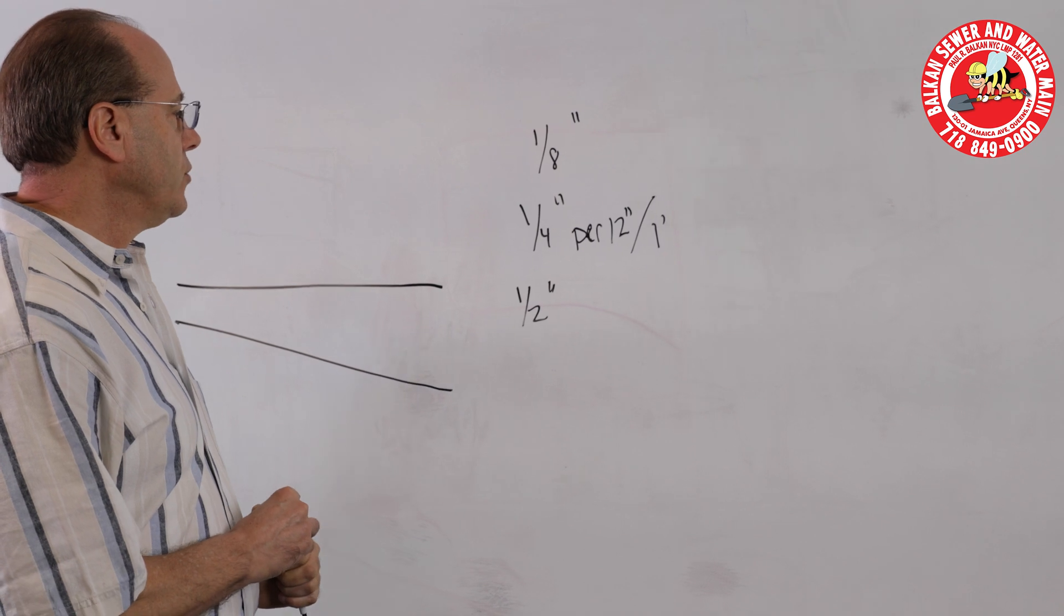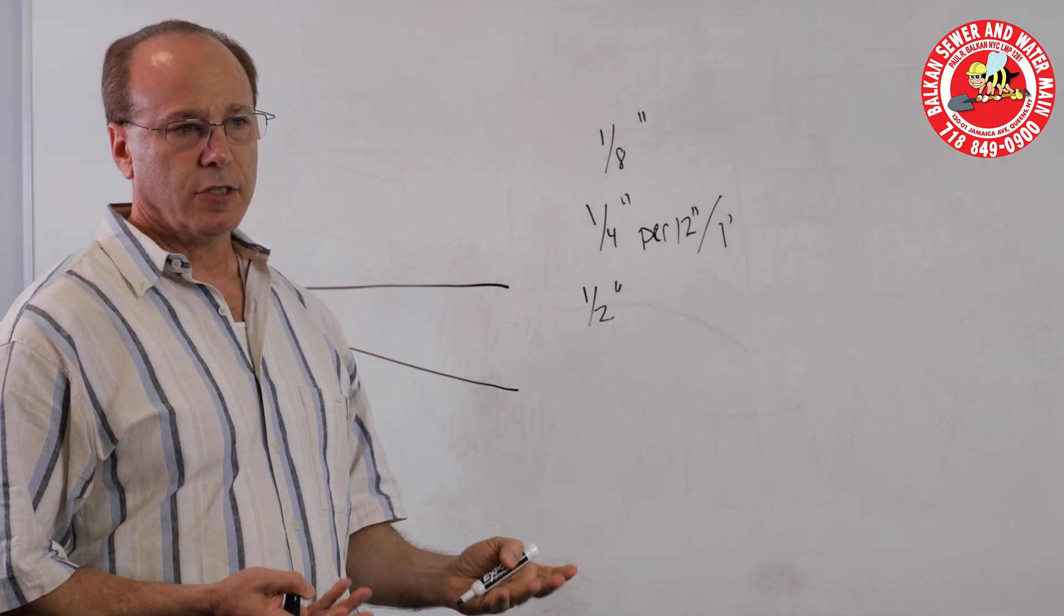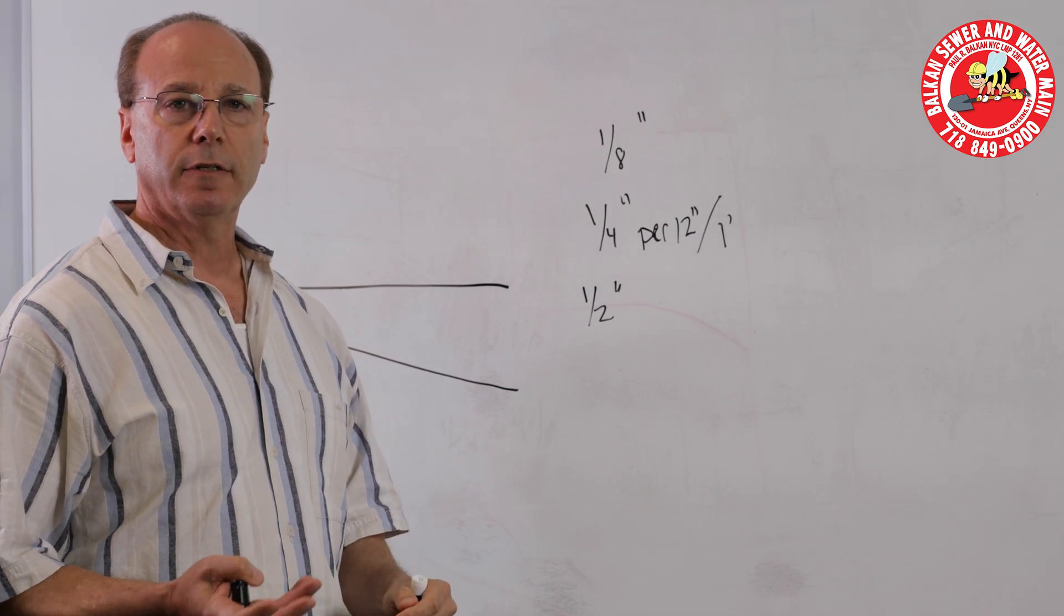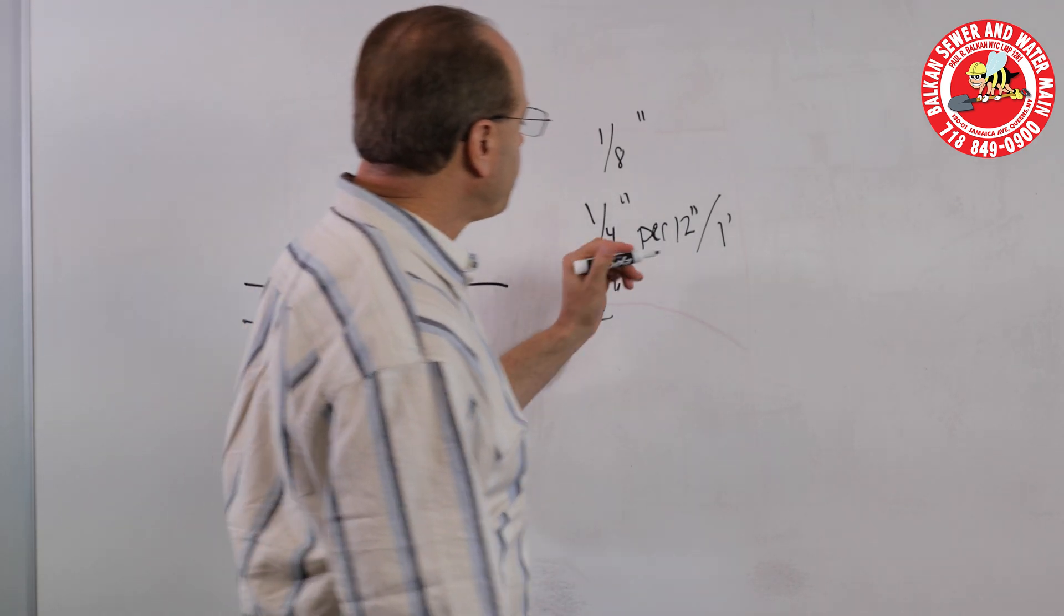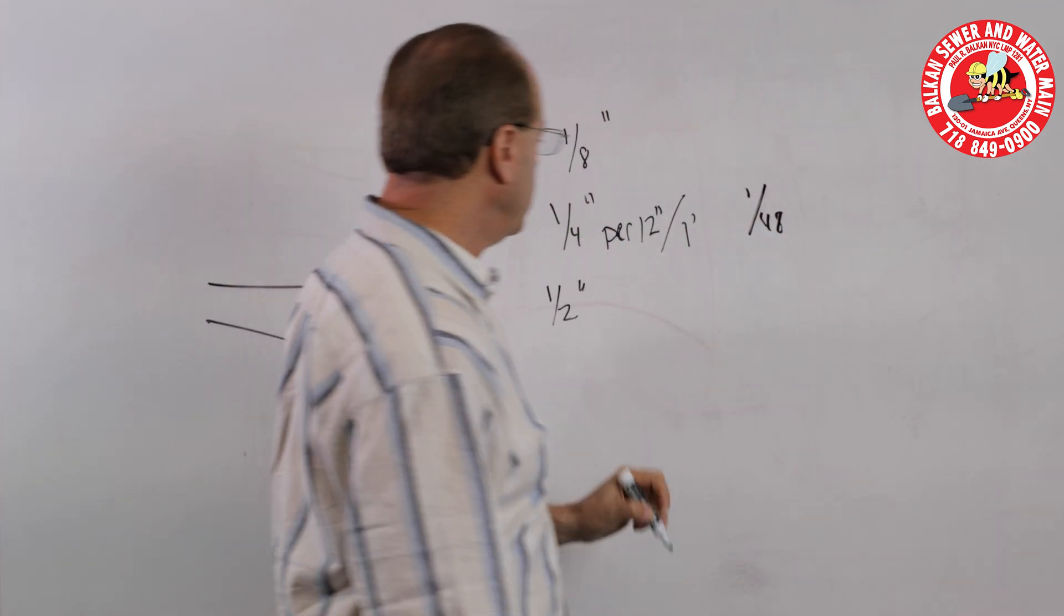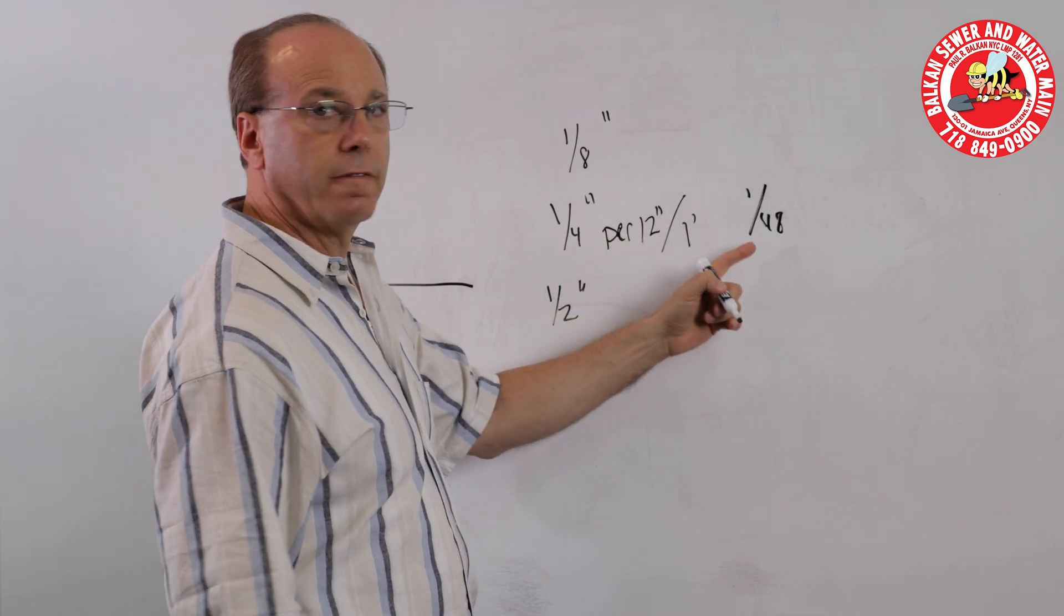Now what that translates into, because there are obviously four quarters in each inch and there are 12 inches in a foot, that's 1/48th if you did a percentage. One quarter inch per 12 inches is 1/48th.